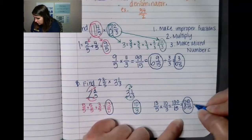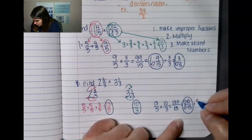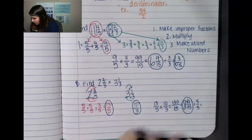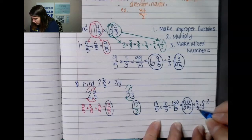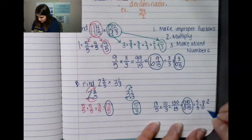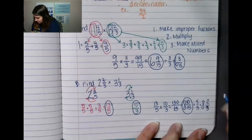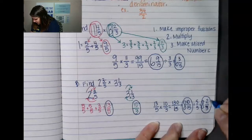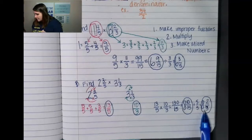I can stop at eight and ten-fifteenths, or if I want to challenge myself to be a seventh grader, I can reduce. Five goes into both ten and fifteen, so ten divided by five is two, and fifteen divided by five is three. That gives me two-thirds. So my final answer is eight and two-thirds.